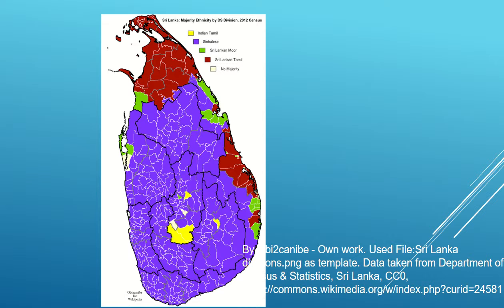Now looking at the population of Sri Lanka, which also shows the ethnicity. On the map, the entire blue shade is the Sinhalese population — Sinhala is the language spoken in Sri Lanka. The brown shade represents Sri Lankan Tamilians, the small green shade areas represent the Sri Lankan Moors, and the yellow shade in the central region represents the Indian Tamilians.